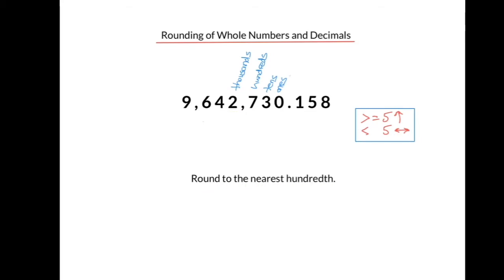Let's try another example. Let's round to the nearest hundredth. The 'th' ending tells us it's to the right of the decimal place, so we locate that place value. We have the tenths and we have the hundredths, so the 5 is in the hundredths column. We'll underline the 5. Then we apply the rounding rule — we look to the digit immediately to the right of the 5. The 8 is greater than 5, so we round up. The 5 becomes a 6. Anything to the right goes to 0, anything to the left stays the same.